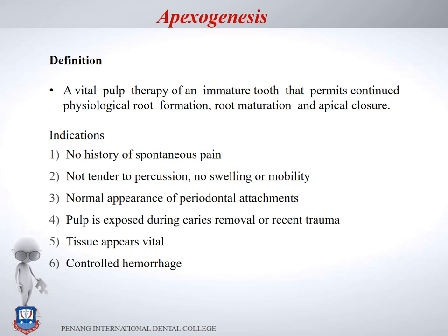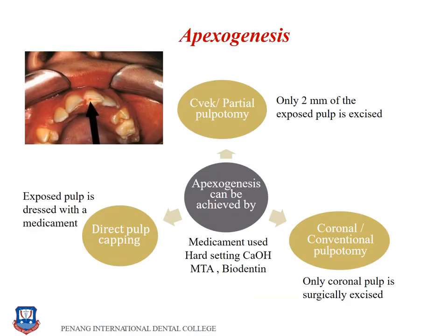Apexogenesis is done only for permanent teeth, not for primary teeth. It is an outcome — physiological root formation, root maturation, and apex closure — achieved through three procedures that preserve the vitality of the radicular pulp.